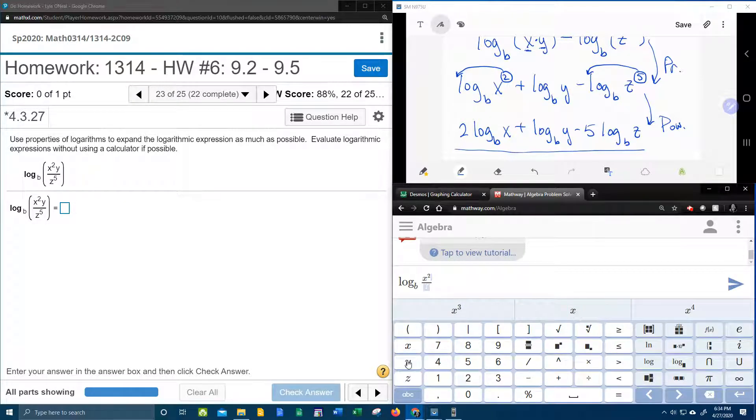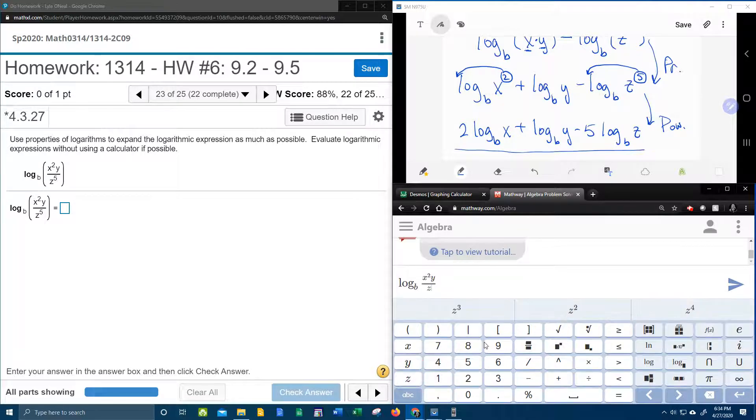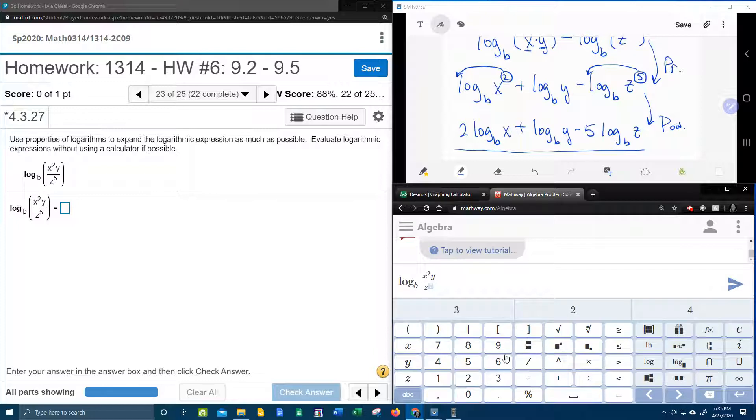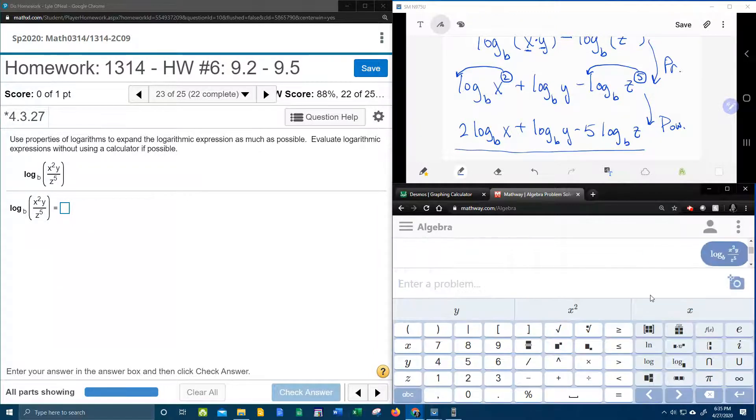We want x squared and then y over z. And then again, it's trying to predict what comes next. We want z to the fifth. So we're going to have to come down here and go to the fifth. And then if I click the arrow, oh, I'm going to have to scroll down. Look at that.